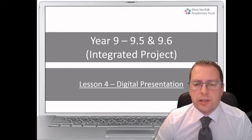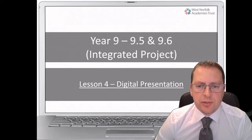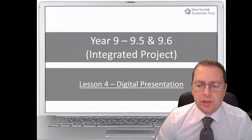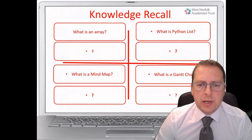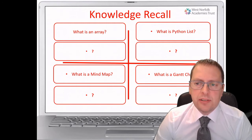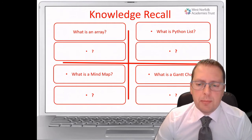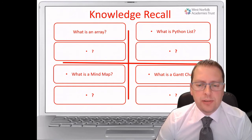This is the fourth lesson for your integrated project. In this lesson you'll be looking to create a digital presentation, so we need to understand what a digital presentation is. Before we move forward, we have our knowledge recall questions and you need to answer these four questions: what is an array, what is a Python list, what is a mind map, and what is a Gantt chart. You need to answer those four questions in your ePortfolio before you move on — you can pause the video and answer those questions.